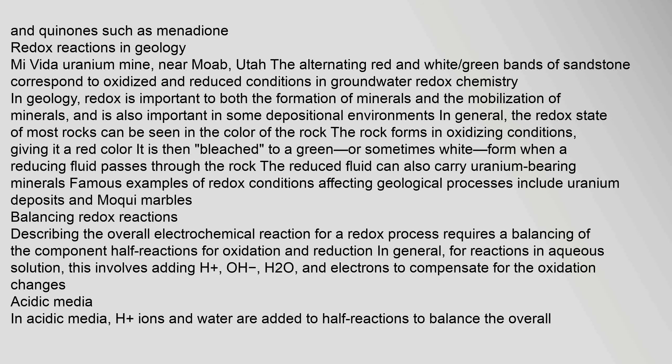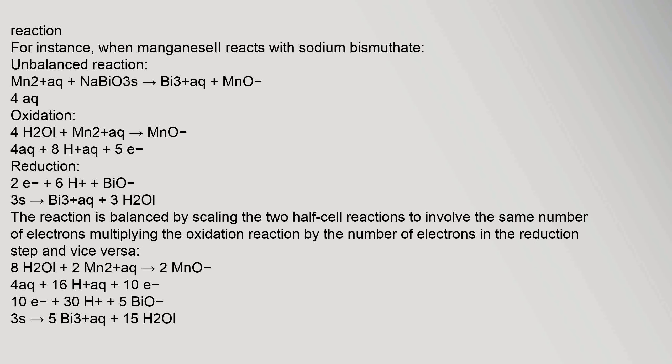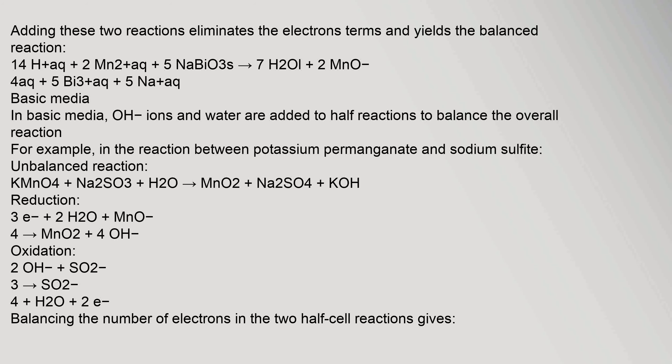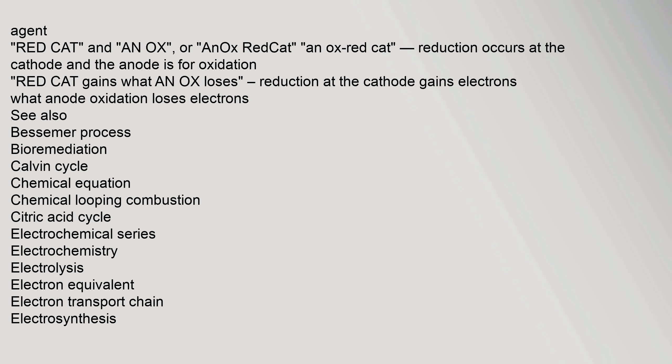Describing the overall electrochemical reaction for a redox process requires balancing the component half-reactions. For reactions in aqueous solution, this involves adding H+, OH−, H2O, and electrons to compensate for the oxidation changes. In acidic media, H+ ions and water are added to half-reactions to balance the overall reaction. For instance, when manganese reacts with sodium bismuthate, the two half-reactions are combined, eliminating the electron terms and yielding the balanced reaction. A useful memory aid: 'Red Cat, An Ox' — reduction occurs at the cathode and oxidation occurs at the anode. 'Red Cat gains what An Ox loses' refers to electrons.